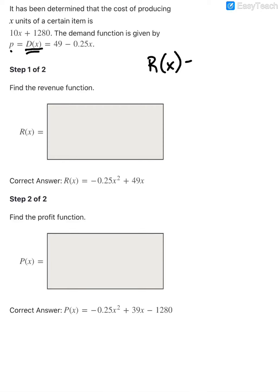The way you find a revenue function is you multiply the demand, what they're calling p in this case, times the quantity. So if we take what they gave us for the p, 49 minus the 0.25x, and we multiply times x, which is the number of units, this is going to distribute. So we're going to end up with 49 times x and then we have minus 0.25 times x squared.